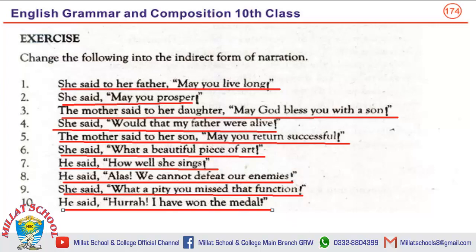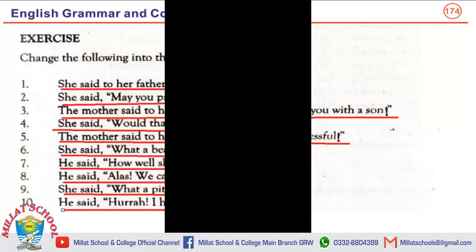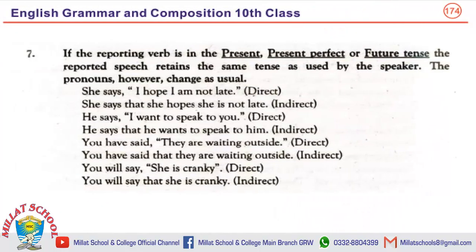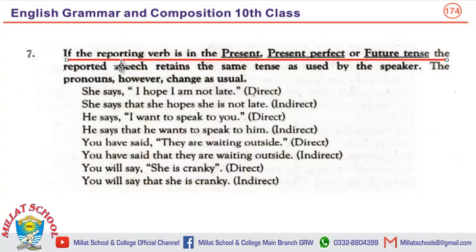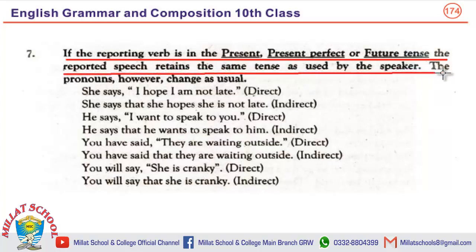I hope now it is clear to you how to change exclamatory sentences from direct to indirect. Now your last rule — a very important and basic rule: if the reporting verb is in the present, present perfect, or future tense, the reported speech retains the same tense as used by the speaker. The pronouns, however, change as usual.